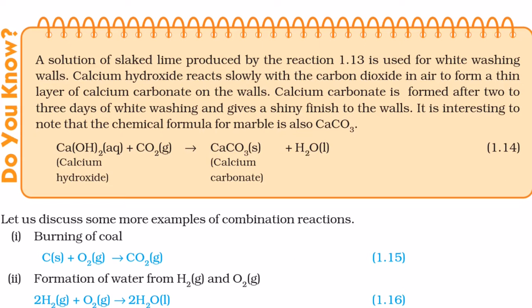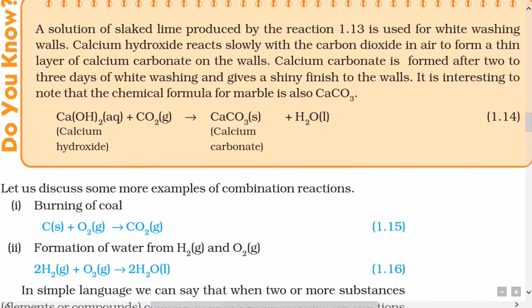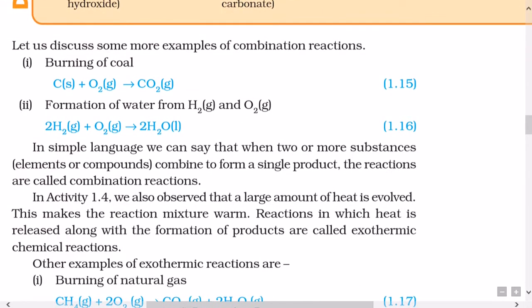Calcium hydroxide reacts slowly with the carbon dioxide in air to form a thin layer of calcium carbonate on the walls. Calcium carbonate is formed after two to three days of whitewashing and gives a shiny finish to the walls. It is interesting to note that the chemical formula for marble is also CaCO3. The reaction is: Ca(OH)2 (aqueous) plus CO2 (gaseous) gives rise to CaCO3 (solid) plus H2O (liquid).